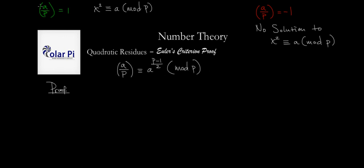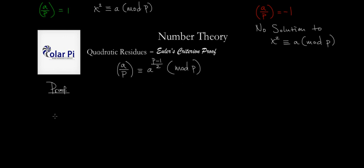Recall that the Legendre symbol a over p being equal to 1 means that a is a quadratic residue mod p, which in turn means that this congruency equation has a solution. And then a over p being equal to negative 1 means that a is a quadratic non-residue mod p, so this congruency equation has no solution. Both of those are very important to keep in mind. Our proof is going to go into two cases: when a over p is 1, and when a over p is equal to negative 1.